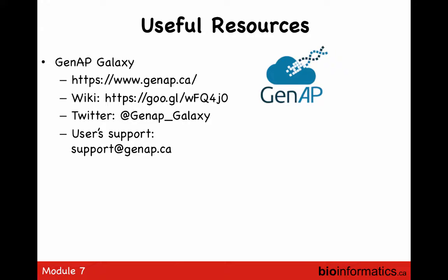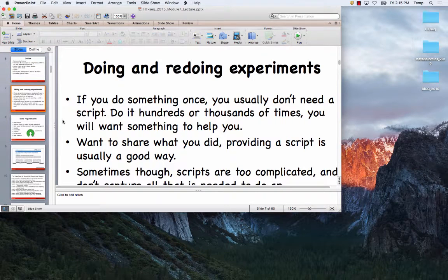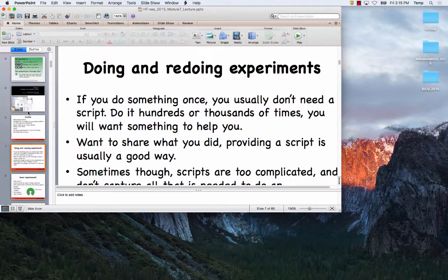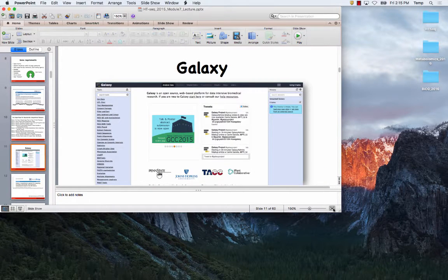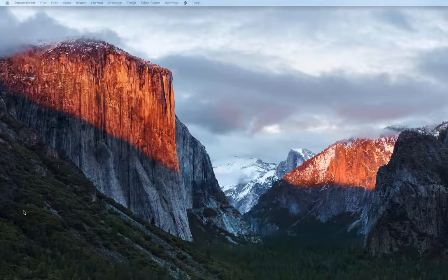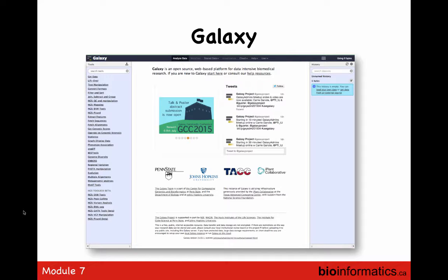Q&A: Questions about local Galaxy installations — yes, you can still ask questions if something goes wrong locally, although it may not always be possible to determine what's wrong without knowing which libraries are installed on your computer. Regarding bacterial and metagenome tools — yes, there are actually several tools in GenApp for bacterial genome and metagenome analysis. If something you need isn't there, you can contact us and we'll try to help.